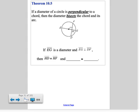This one goes the other way. It says if a diameter of a circle is perpendicular to a chord, then the diameter bisects the chord and the arc. In the diagram, this chord would be bisected, and these arcs would also be bisected.